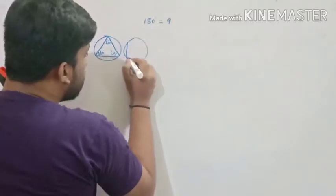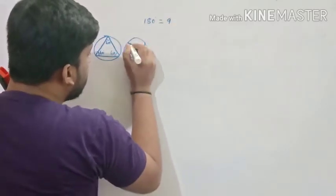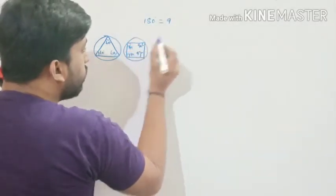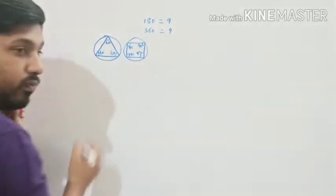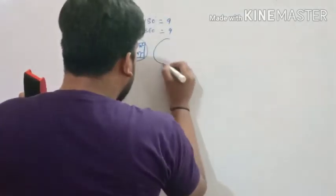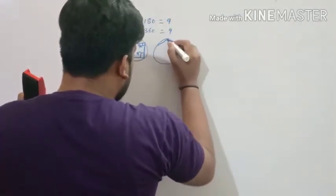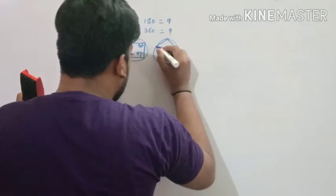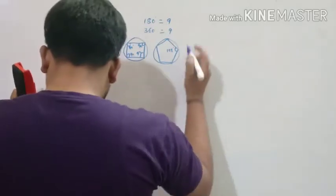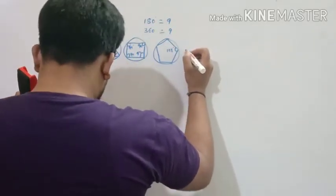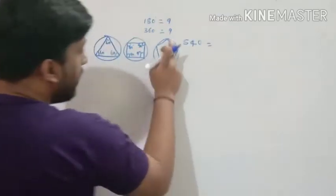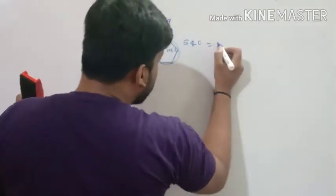Going further: inscribe a pentagon in the circle. The sum of interior angles of a pentagon is 180×(5−2) = 540. Add the digits: 5+4+0 = 9. How amazing and fantastic! Again 9.